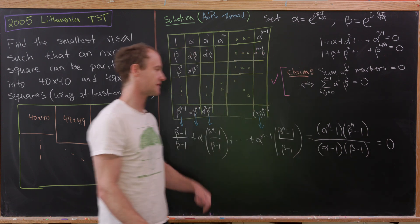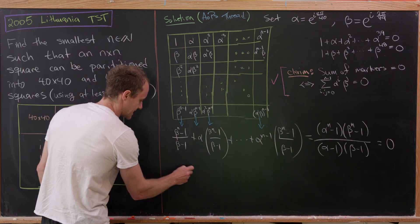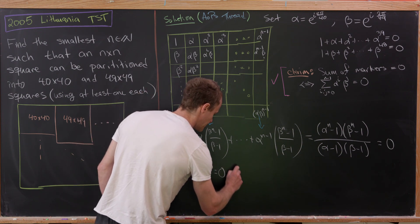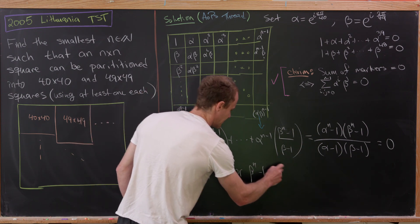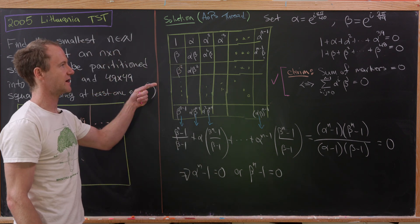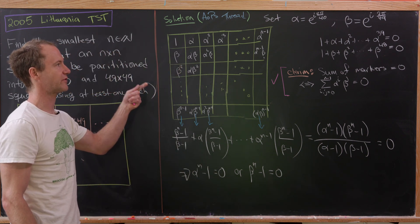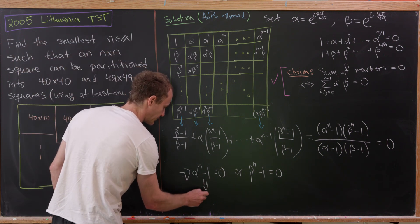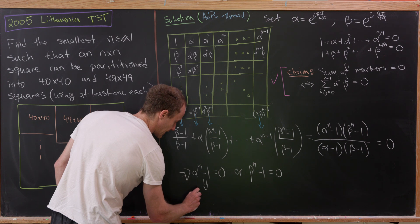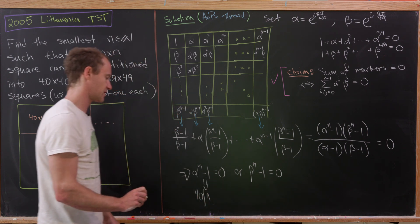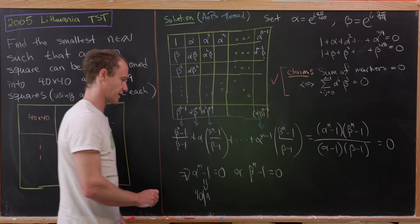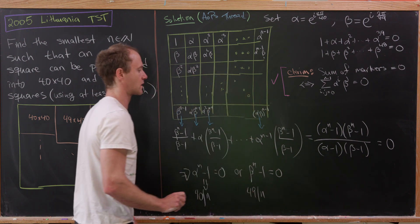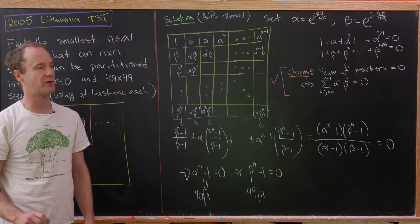Since this expression equals zero, either alpha to the n minus one equals zero or beta to the n minus one equals zero. Since alpha is a primitive 40th root of unity, the first condition implies 40 divides n — i.e., n is a multiple of 40. Since beta is a primitive 49th root of unity, the second condition implies 49 divides n — i.e., n is a multiple of 49.